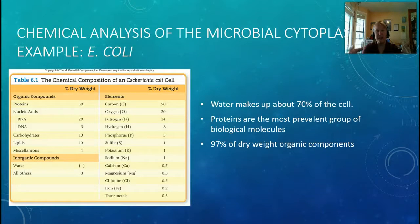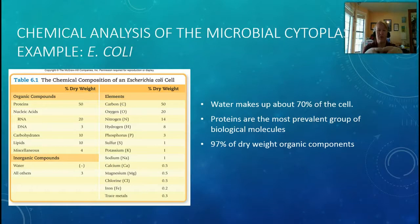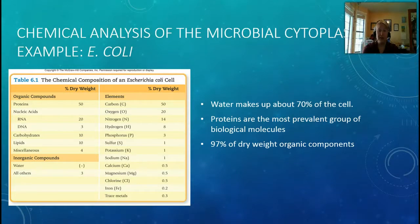Let's look at an example with E. coli. The number one thing all cells must have is a lot of water — 70% of the E. coli cell is water. The next biggest group is proteins, at about 50% of dry weight. This means it's really important that E. coli brings in the nutrients needed to make amino acids for those proteins. Dry weight means we dehydrate the cell, remove all the water, and measure what's left — 50% of that is protein.